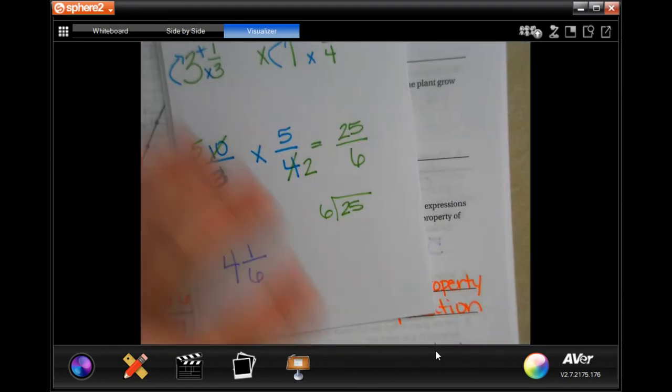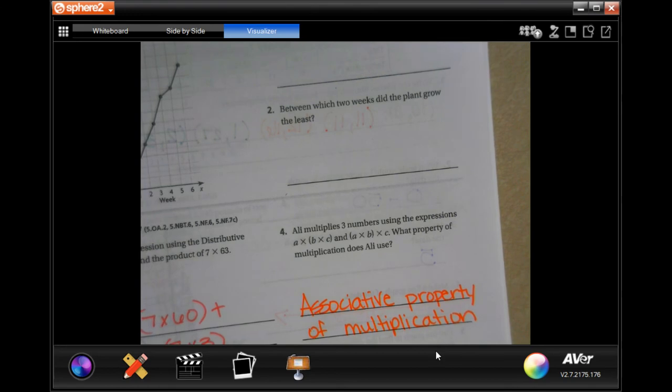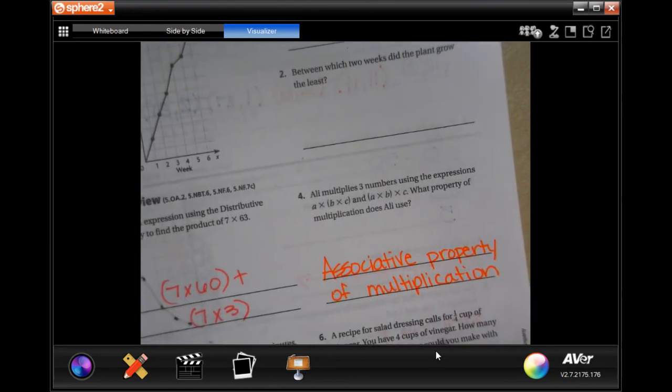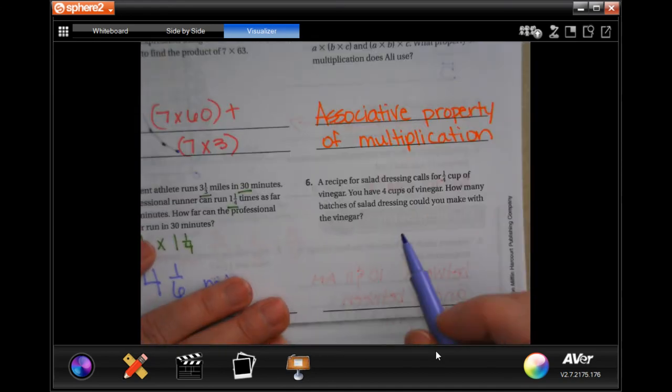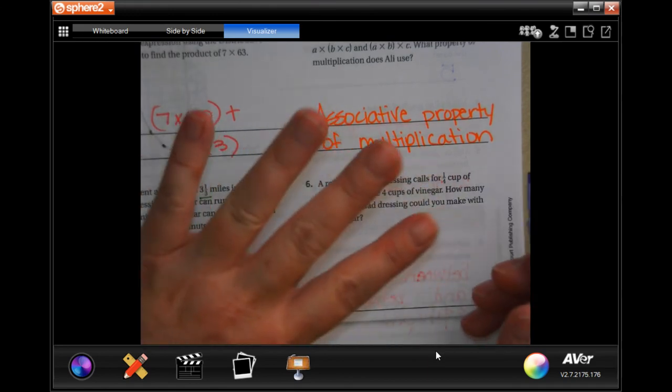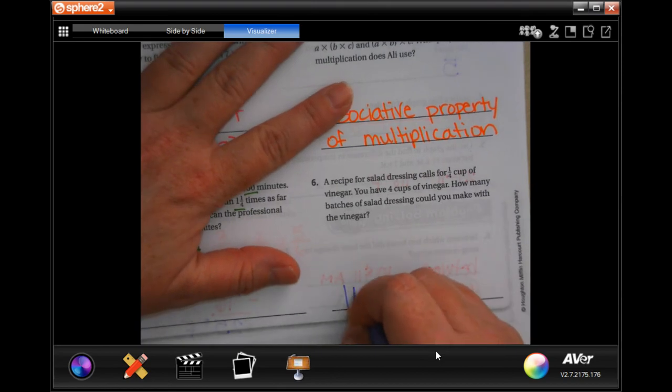Make sure you guys are showing your work. A recipe for salad dressing calls for 1/4 cup of vinegar. You have 4 cups of vinegar. How many batches of salad dressing can you make with your vinegar? So each one of those cups is going to be cut into four, because you only need 1/4 of a cup. So 4 times 4 is 16. 16 batches.